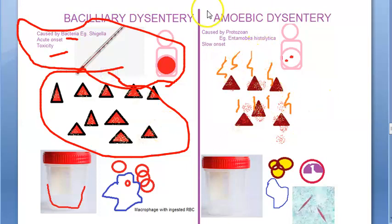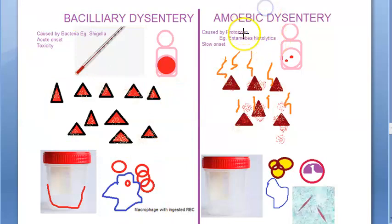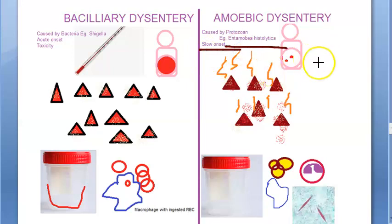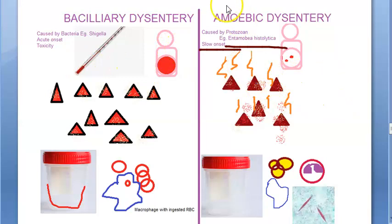Now in amoebic dysentery, this is actually caused by a protozoan, that is Entamoeba histolytica. Amoebic dysentery is slow in onset — the patient does not get symptoms suddenly. Fever is not there, and toxicity is also not there.